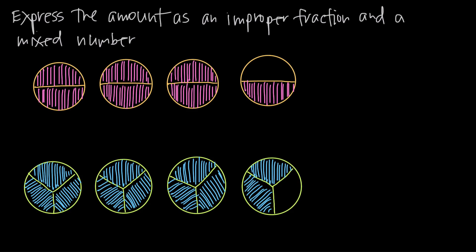In this video, we're talking about improper fractions and mixed numbers. In order to explain these concepts, we're going to talk a lot about pie. Our first example is going to be about strawberry pie, and our second example is going to be about apple pie. We've been given a certain amount of pie, and we want to express that amount as both a mixed number and as an improper fraction.